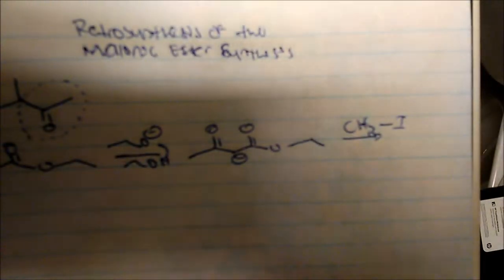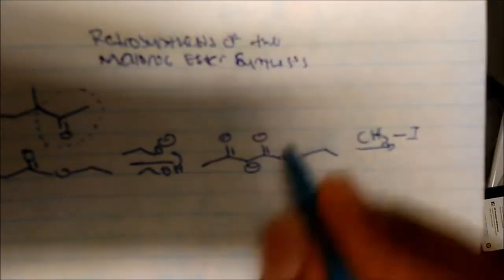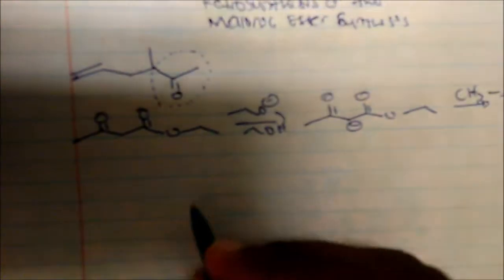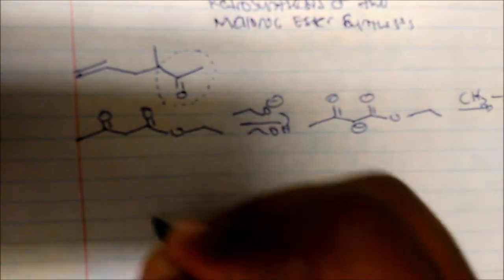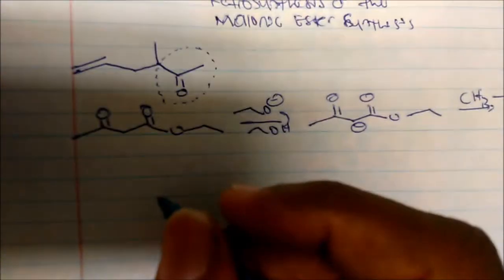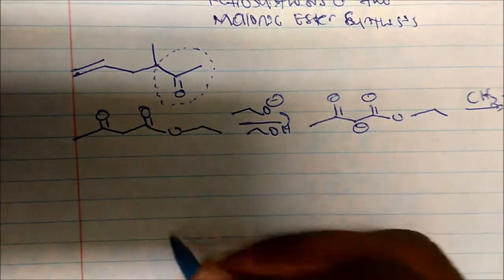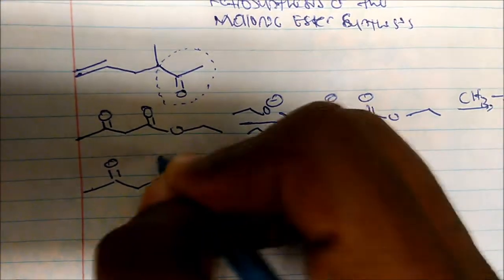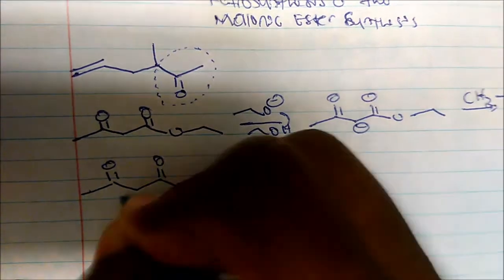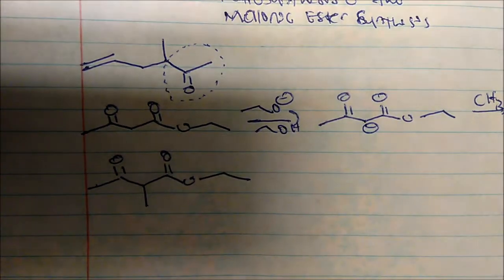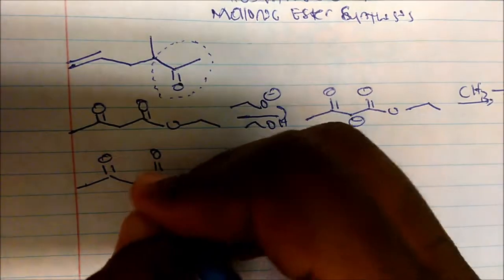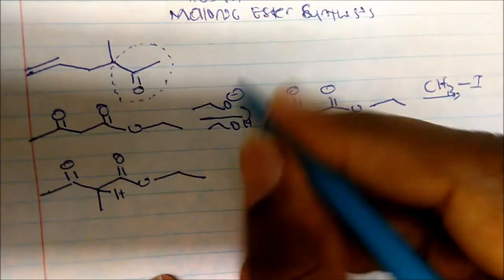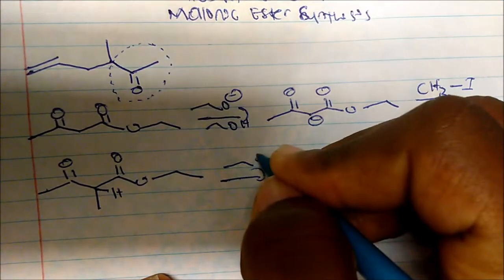If I add methyl iodide, it simply adds the CH3 group on. So if that is the case, we come to a product where I have my CH3 that's added on. Remember, I still have one excess alpha hydrogen.